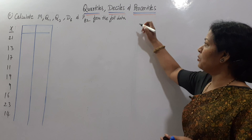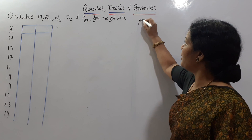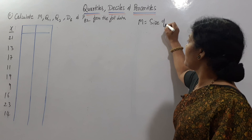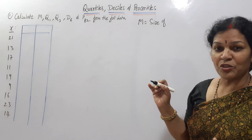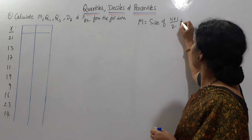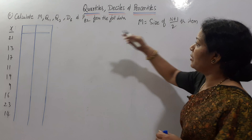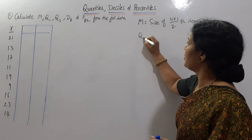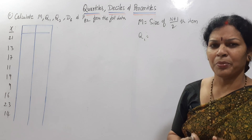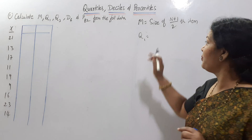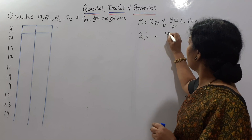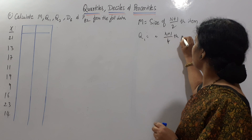The median formula is: size of n plus 1 by 2th item. Next, Q1 means quartile 1. The formula is: size of n plus 1 by 4th item.